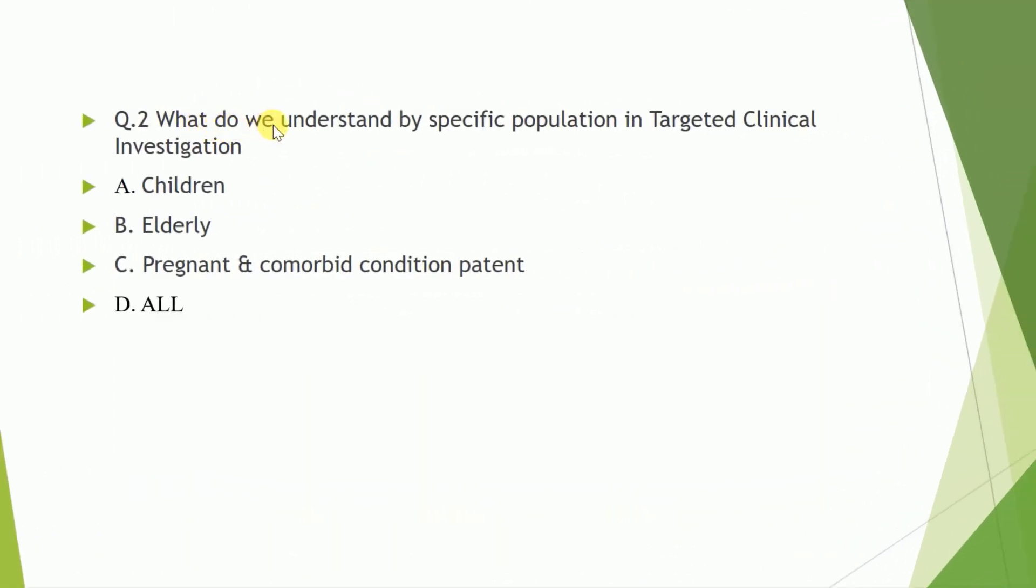Question number two: what do we understand by specific population in targeted clinical investigation? A children, B elderly people, C pregnant and comorbid condition patients, D all of these. So the correct answer is all of these.